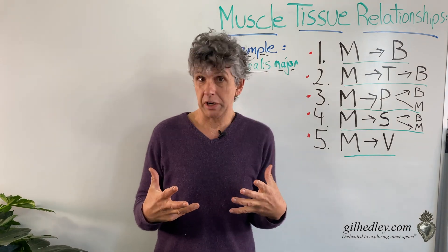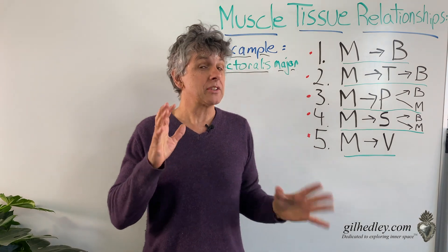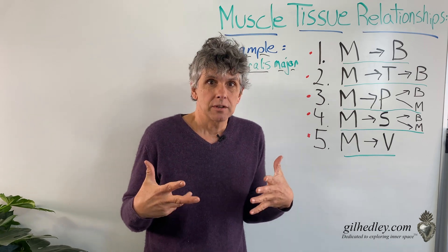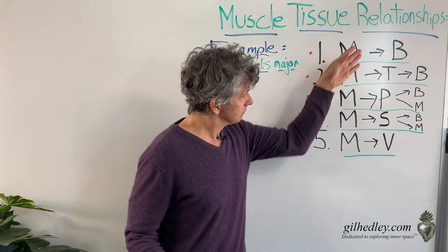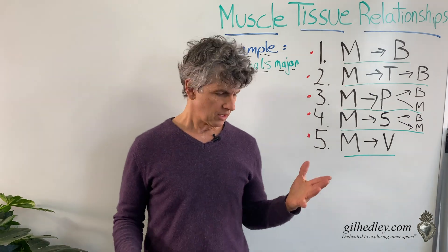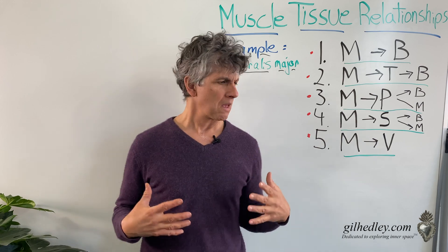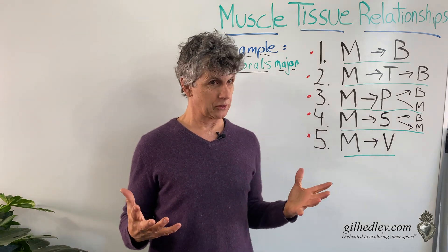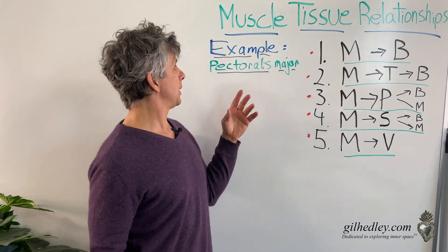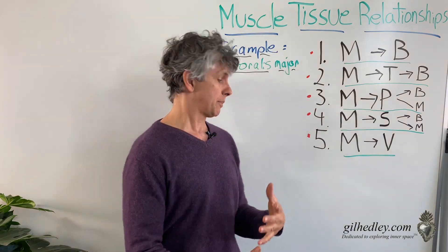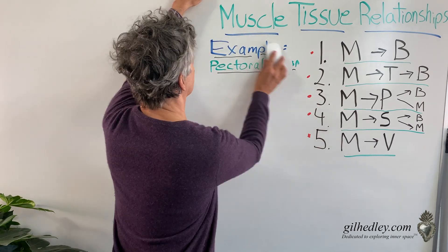I thought it would be good to have an example, because I've actually dissected the entire body to discover all of the relationships of muscle tissue in these categories. Let's start with a famous muscle — the pec major. Pectoralis major means big chest muscle. Major is big, pectoralis is chest. It's an easy example and everybody knows a little bit about it.